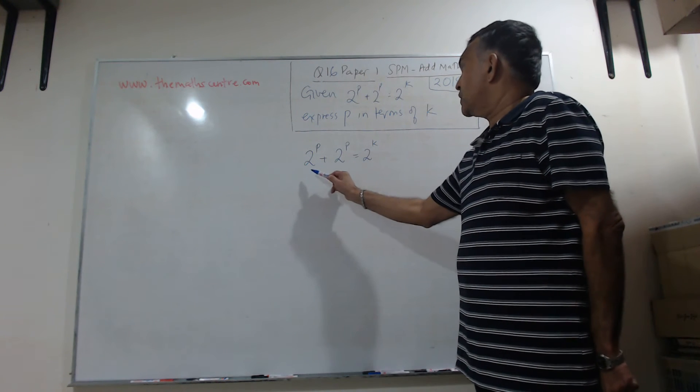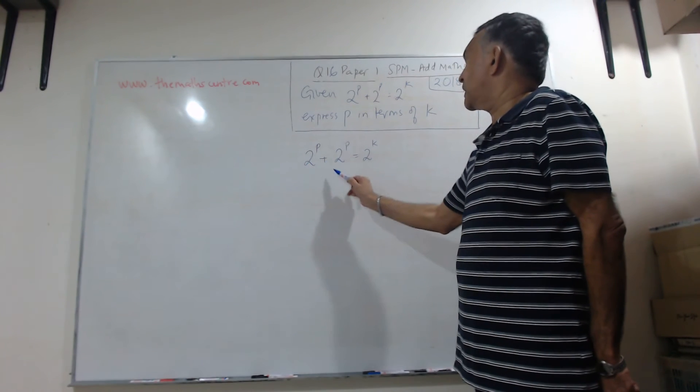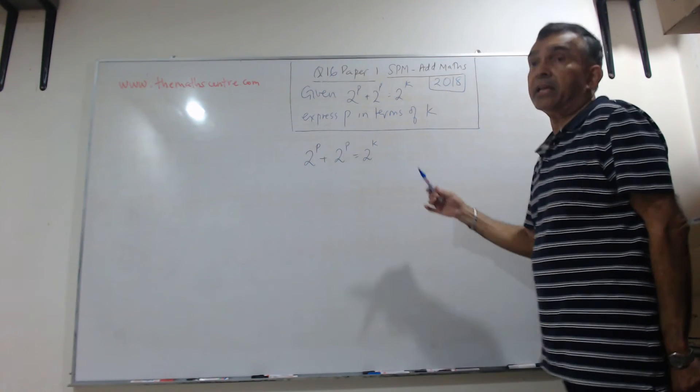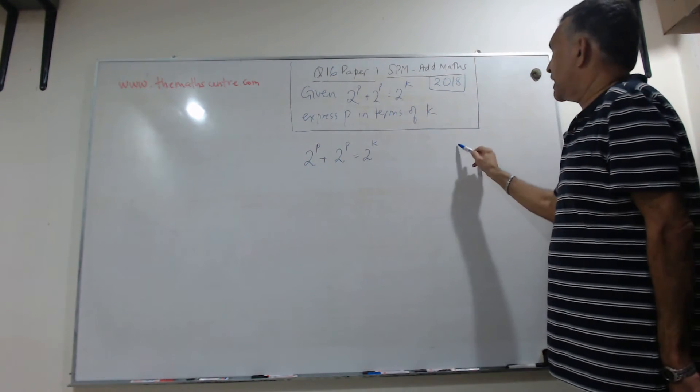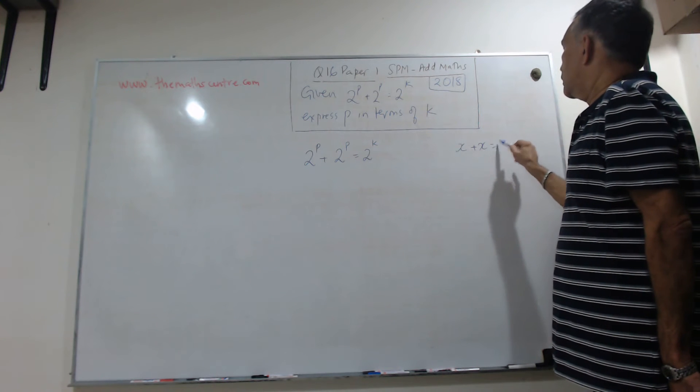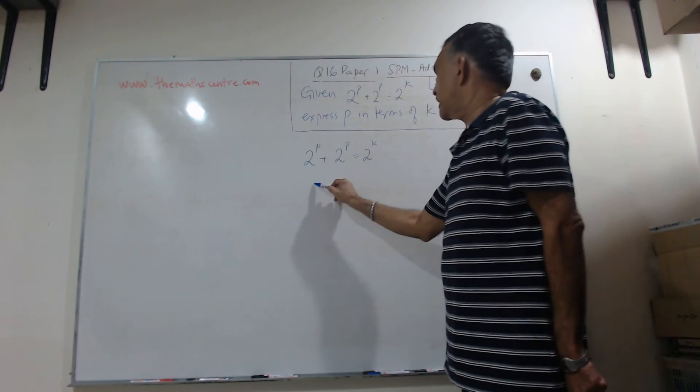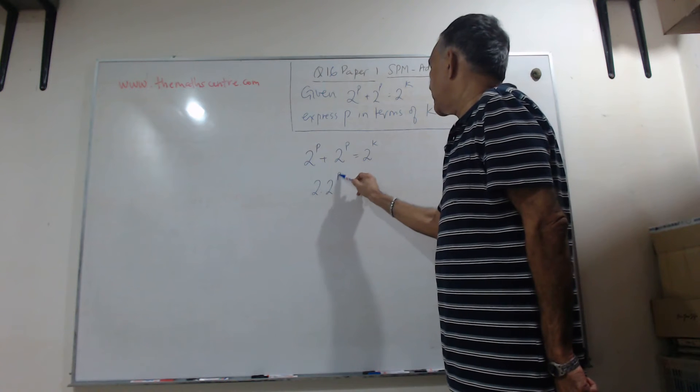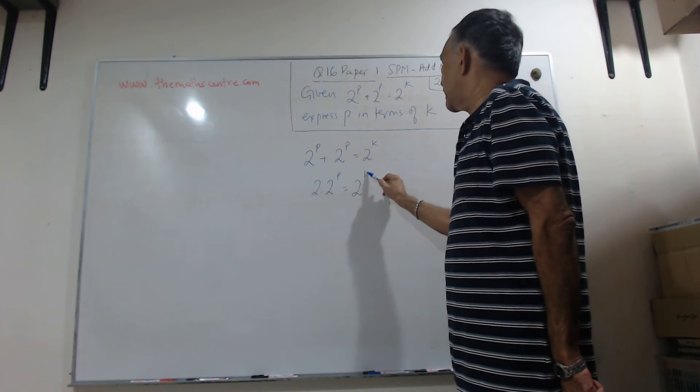So let's start. 2 raised to p plus 2 raised to p is just like adding x to x. What is x plus x? 2x. So we can write this as 2 times 2 raised to the p equals 2 raised to the k.